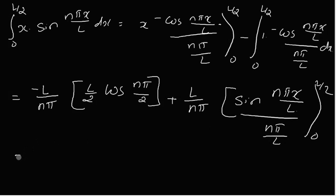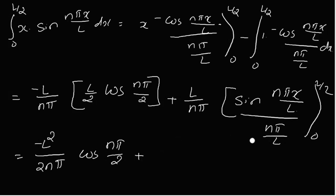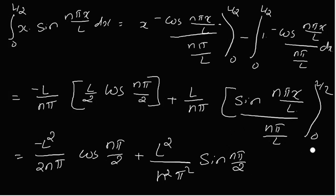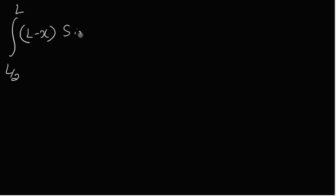Evaluating, I₁ equals −(L²)/(2nπ)·cos(nπ/2) plus (L²)/(n²π²)·sin(nπ/2), after substituting the limits 0 to L/2 and simplifying the resulting terms.